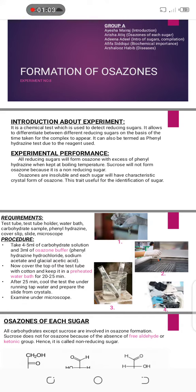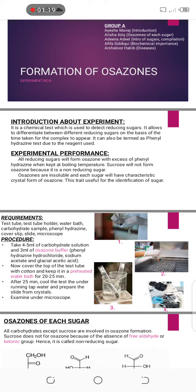Procedure: Take 4–5 ml of carbohydrate solution and 3 ml of Osazone buffer in a test tube. Osazone buffer is a mixture of phenyl hydrazine hydrochloride, sodium acetate, and glacial acetic acid. Cover the top of the test tube with a cotton ball and keep it in a preheated water bath for 25 minutes.